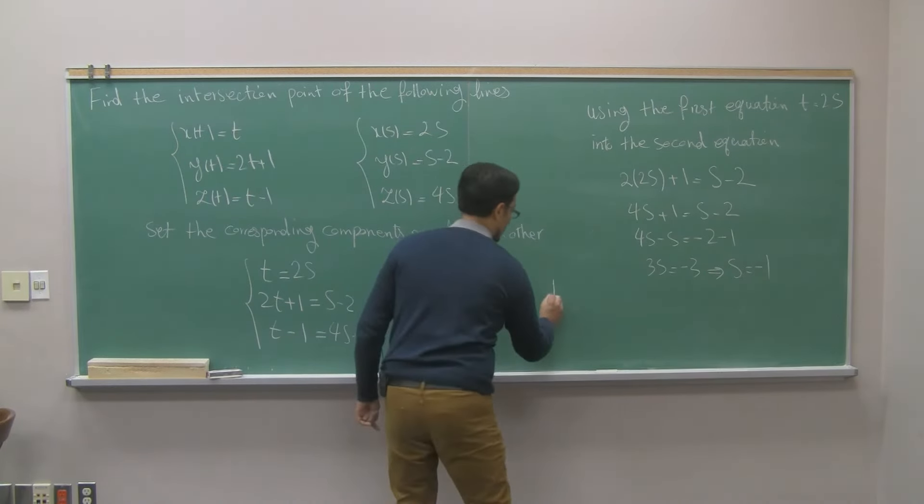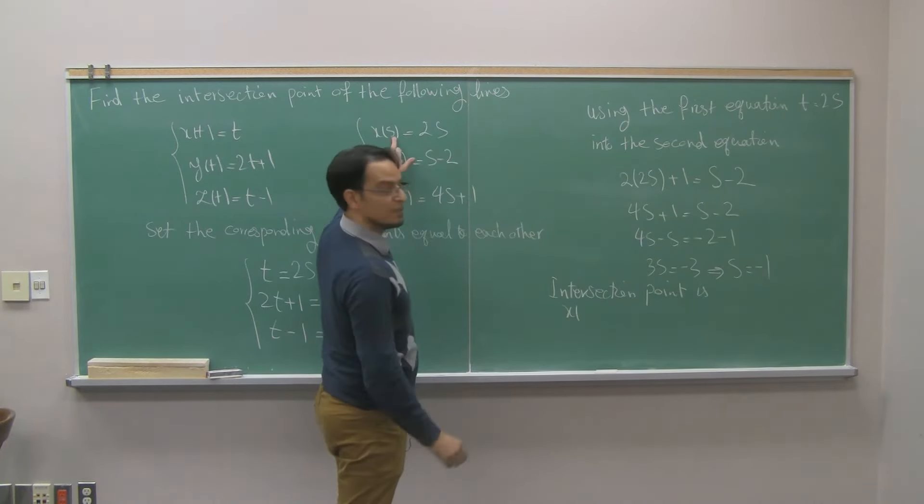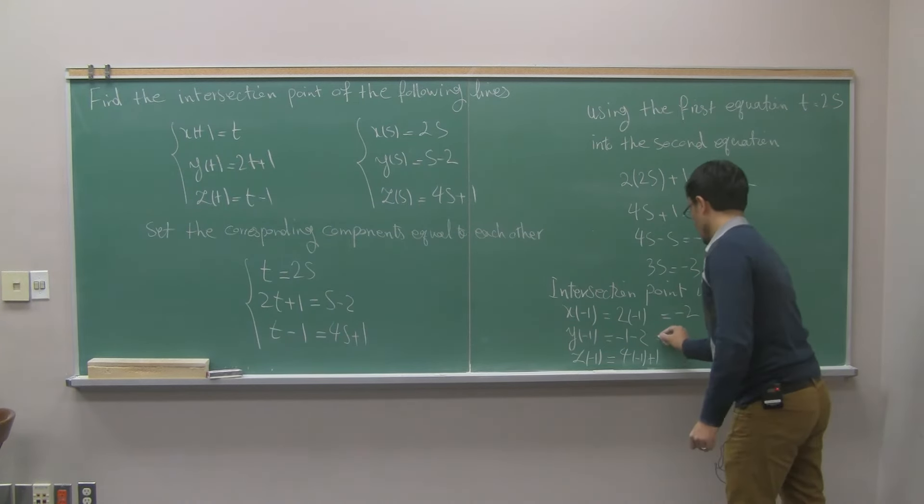So the intersection point is I plug in negative 1 for s, so I get x of negative 1, y of negative 1, z of negative 1. It is 2 times negative 1, negative 1 minus 2, and 4 times negative 1 plus 1. This 2 times negative 1 is negative 2, negative 1 minus negative 2 is negative 3, and 4 times negative 1 plus 1 is negative 3. So the intersection point is negative 2, negative 3, and negative 3.